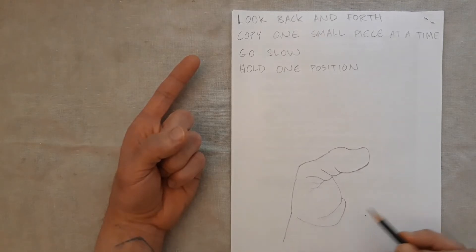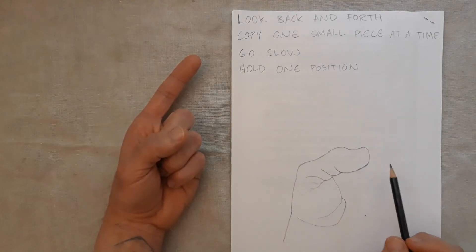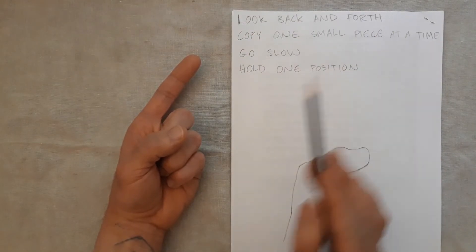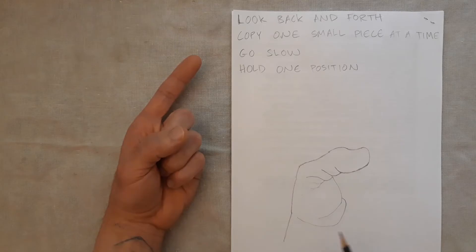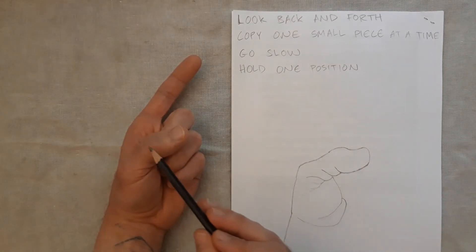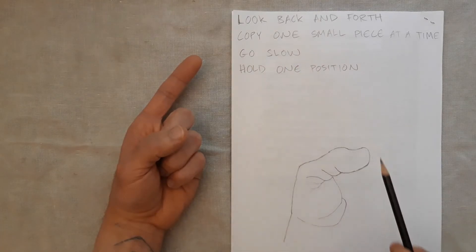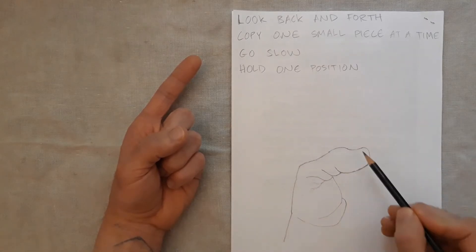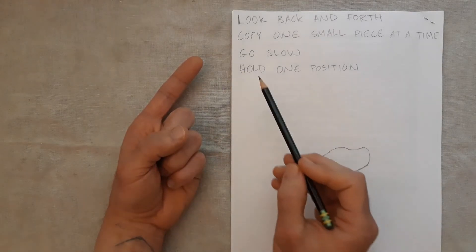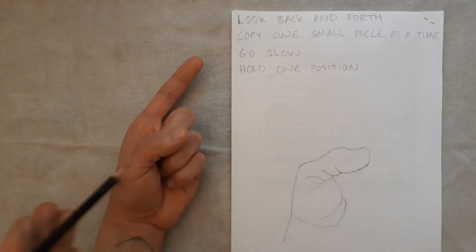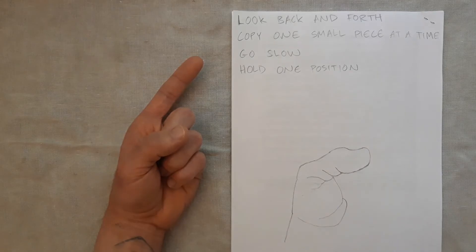I've written those tips up at the top of the paper here. These are the main things you want to keep in mind when you're doing slow contour drawing. I'm looking back and forth. That means my eyes look at the hand and the drawing. Like in two seconds I'll look back and forth about five times and then draw. Copying one small piece at a time. I'm going slow. My hand hasn't moved this whole time. Also my head hasn't moved. I'm holding one position. If I moved my head to the other side of the hand it's going to look completely different.